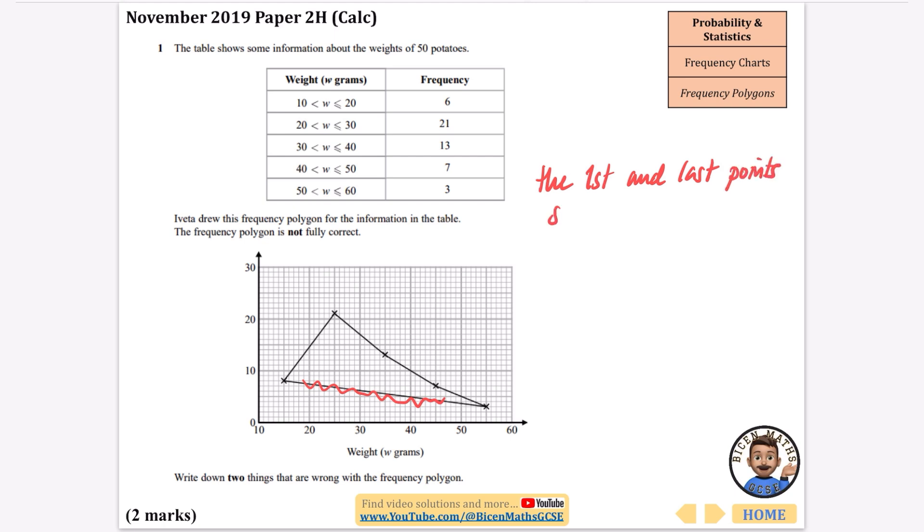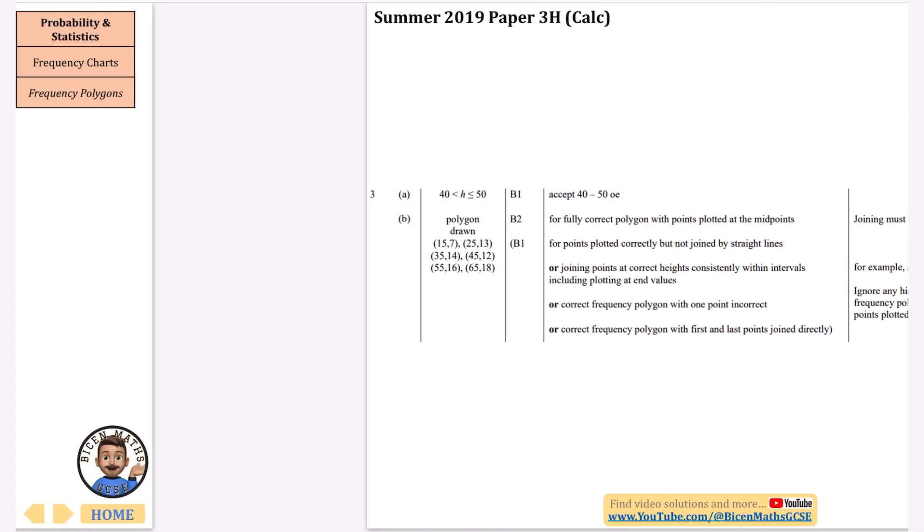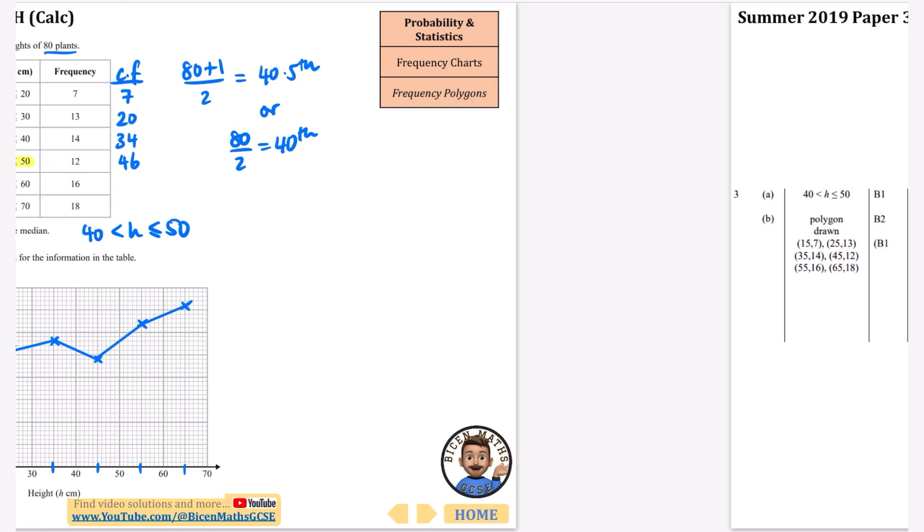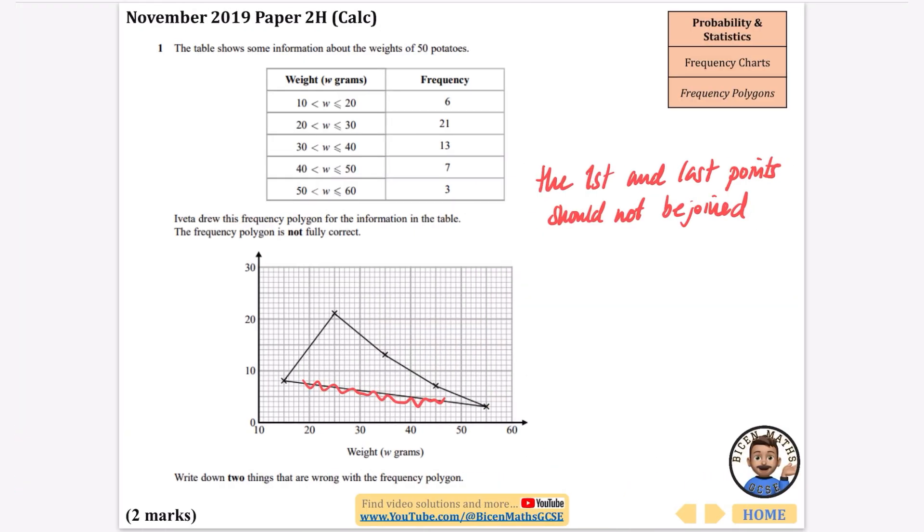I can see why Iveta did that because it doesn't actually look like a polygon unless you connect them together, but it's not a polygon it's just what it's called. So you don't want to join the first and last together, that is one of the other mistakes. And I guess the next thing I'd always do to check this is just to see if there's anything about the scales because they like to do it where the scales aren't correct. So it does go 0, 10, 20, 30, it goes 10, 20, 30, 40, 50, 60, so that all kind of seems fine.